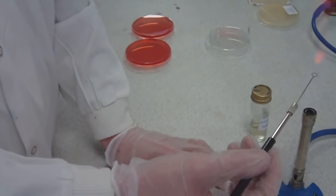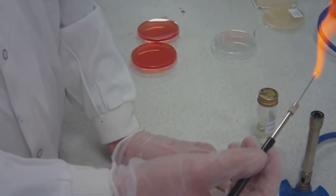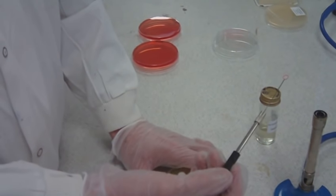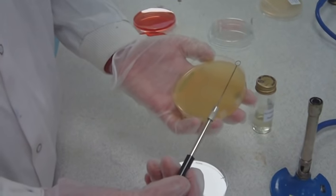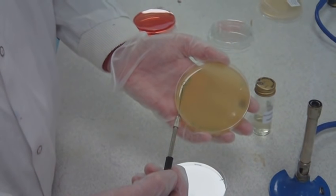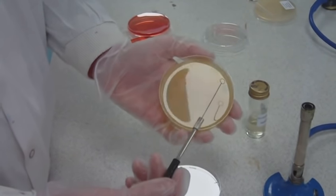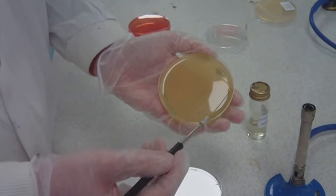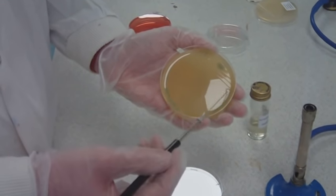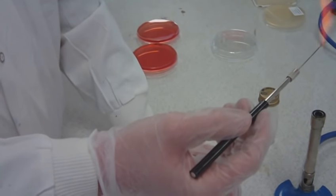Re-flame the loop and let it cool for 5 seconds by touching an unused part of the agar surface close to the edge of the plate. Use the loop to streak the bacteria across a quarter of the agar from the circle you just did in 3-4 lines. Re-flame the loop and allow to cool.